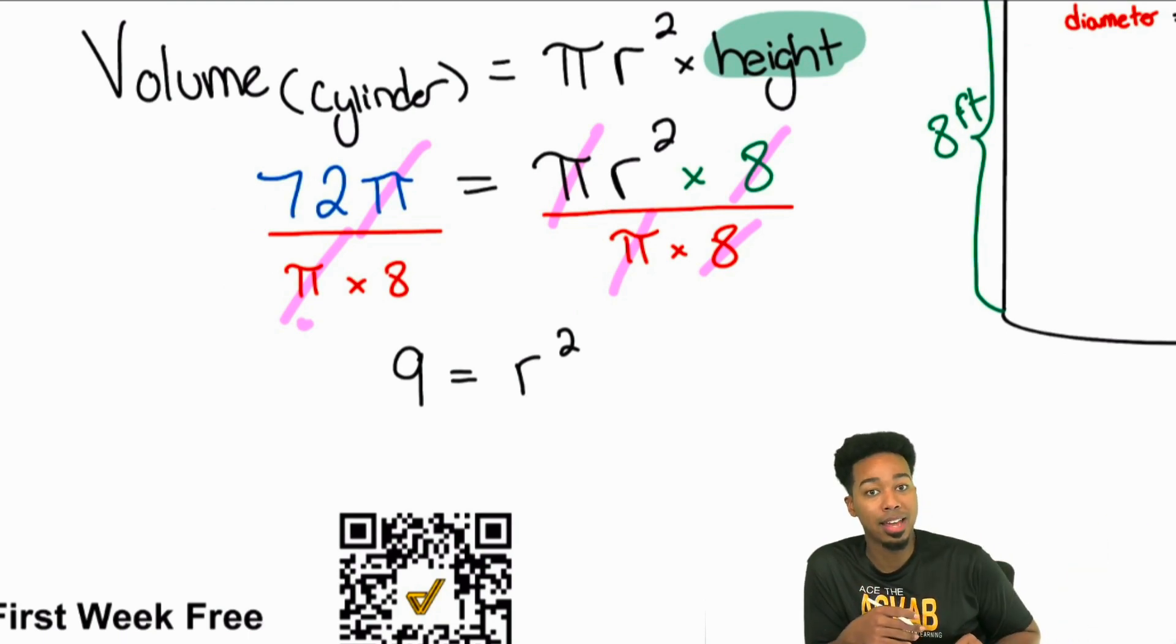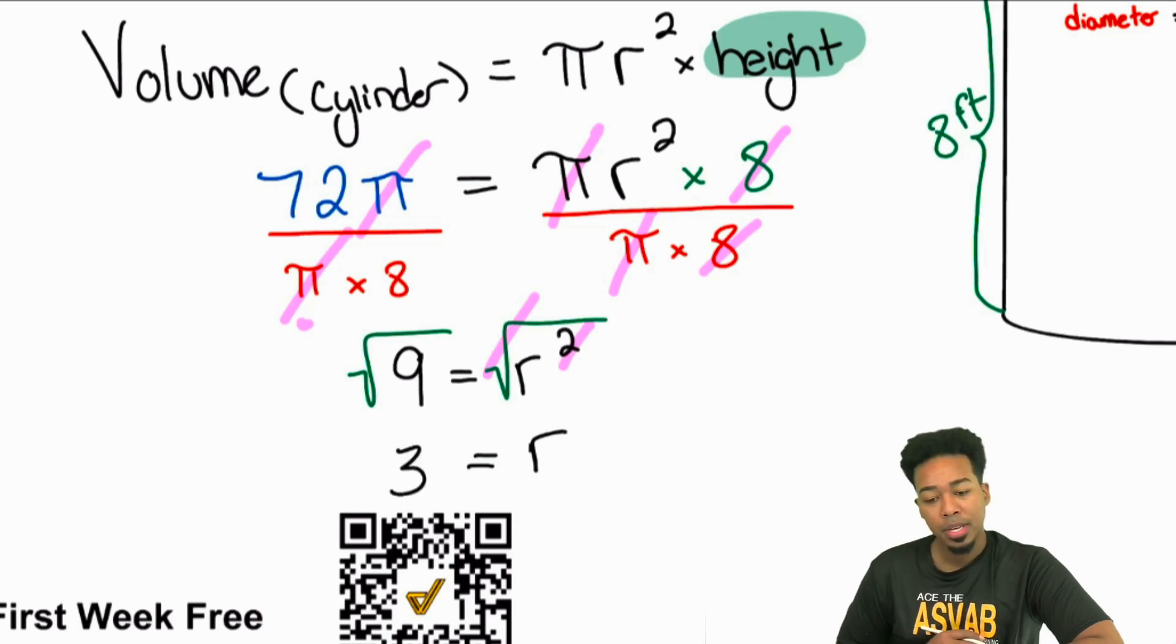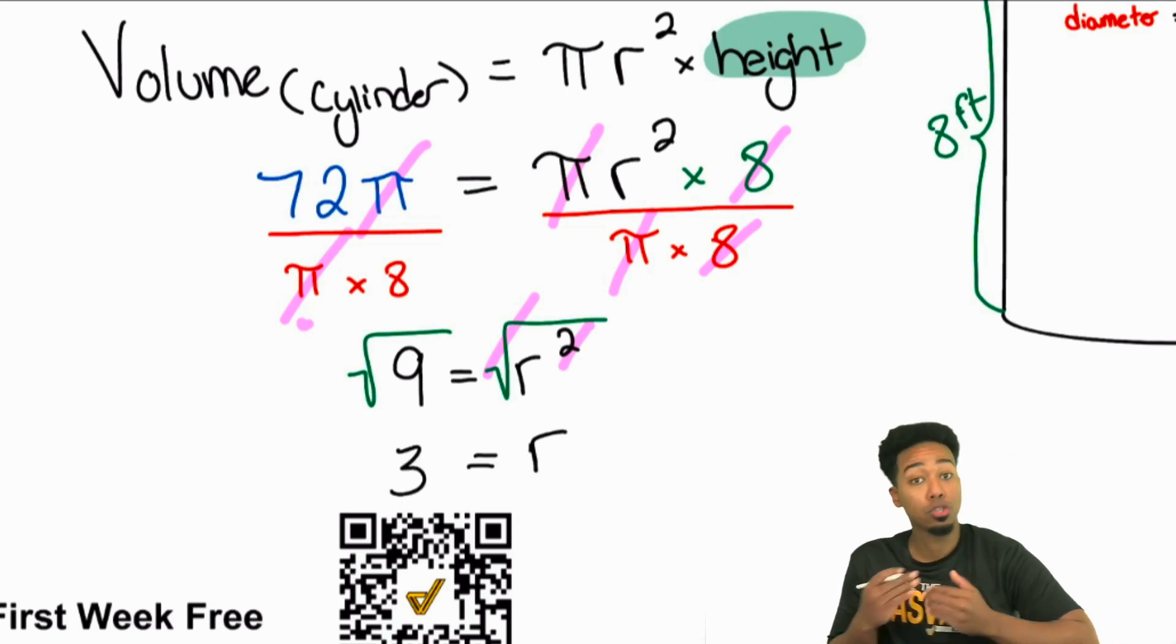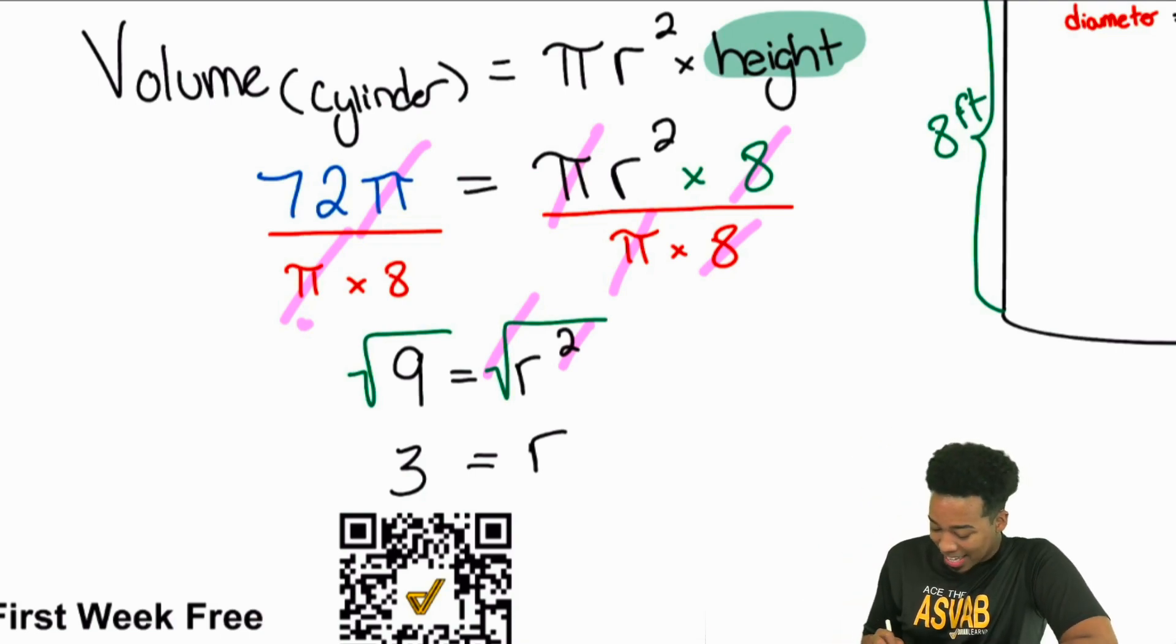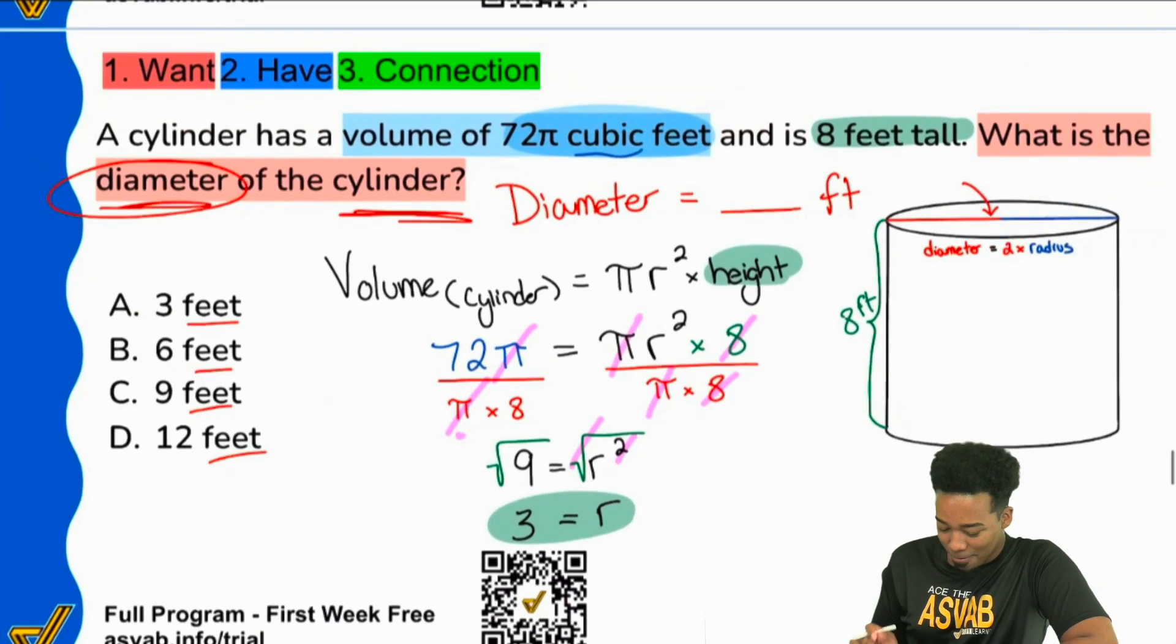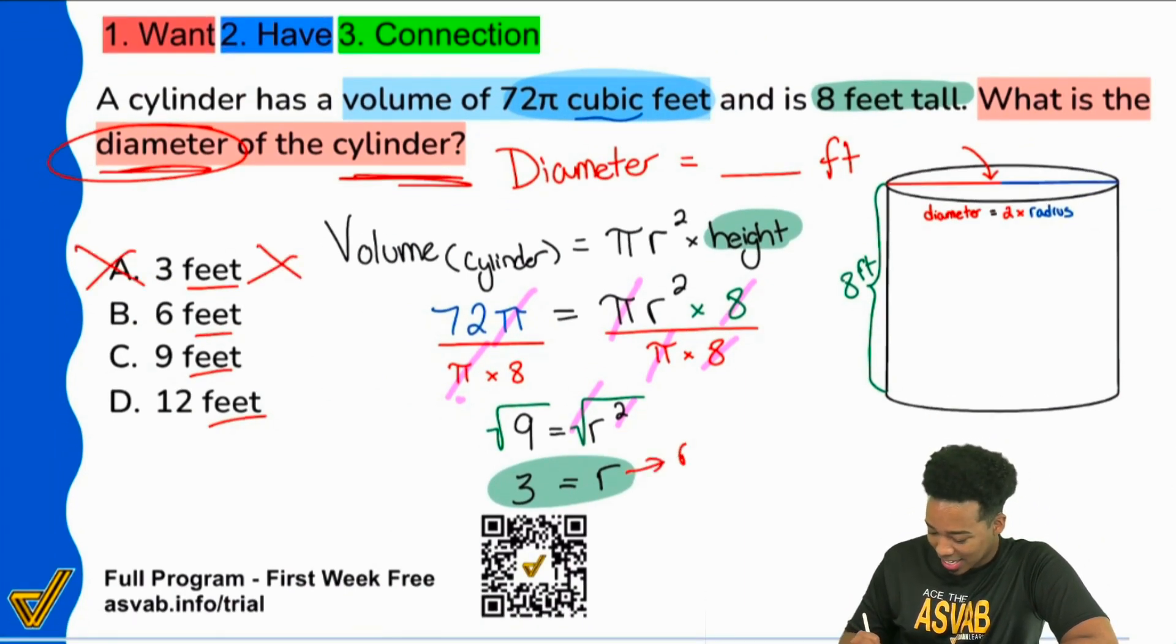So the last thing we need to do here is figure out what r is. And then again, we'll double it to get the diameter. Keep that in mind because it can easily trick you. How do we do the opposite of squaring? The opposite of squaring is the square root. So I'll take the square root of both sides. And it's going to cancel out right there, leaving us with r equals 3. The square root of 9 is 3 because 3 squared is 9. But again, that's not going to be the answer. Do not believe for a second that A is the answer. It is not. Because that is the radius.